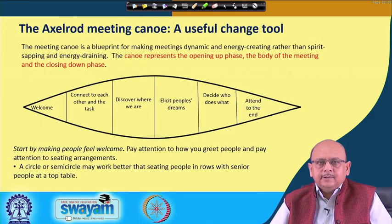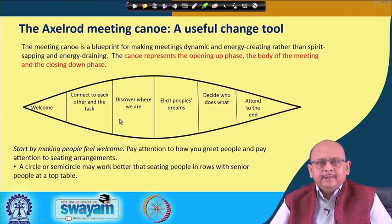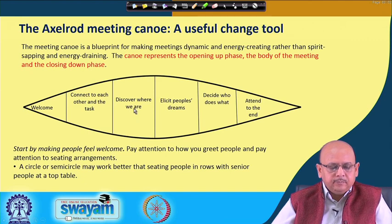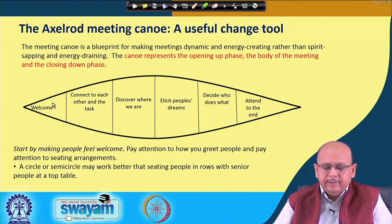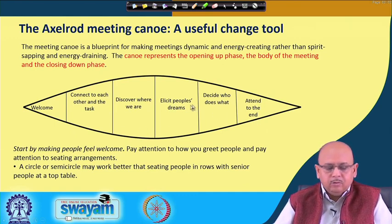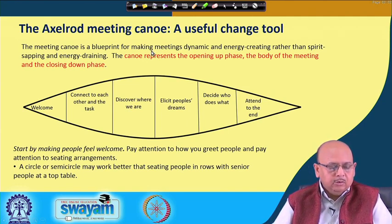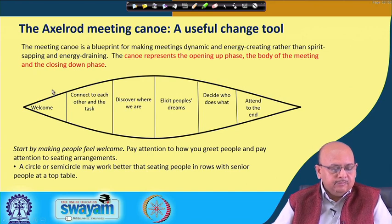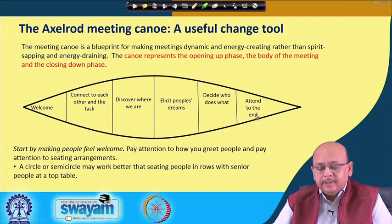We are moving further to discuss one approach which is a very useful tool for bringing about change. It is like a Kanoi — a blueprint for making more dynamic changes in the organization. If you look at this, it represents the opening phase, the body of the meeting, and the closing round phase. If you want to bring about change, how do you go about it? First is the welcome stage, then connect to each other and the task, then discover where we are, then get the dreams, decide what you want to do, act, and then attend to the end.